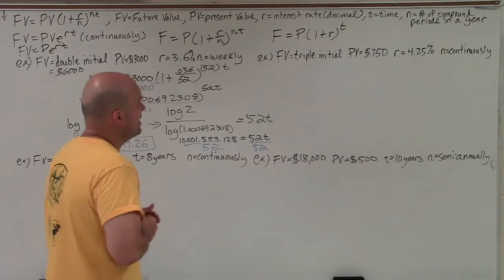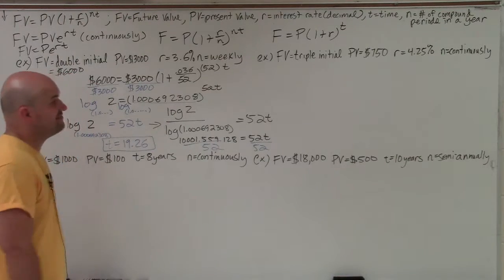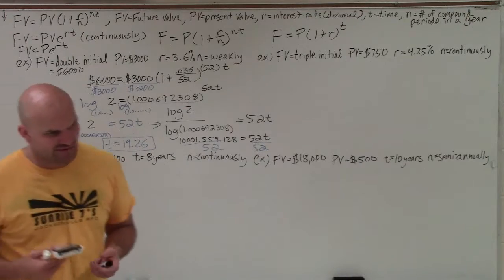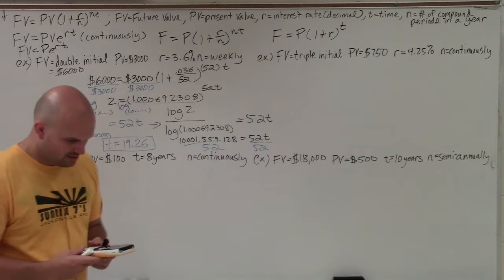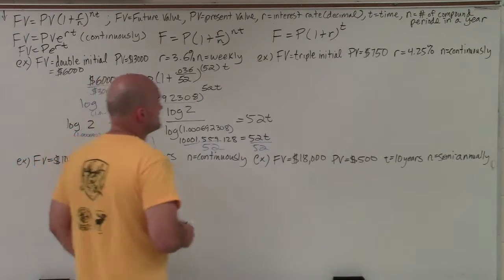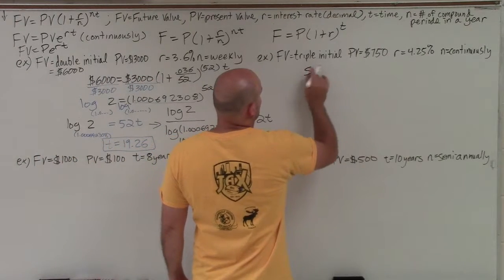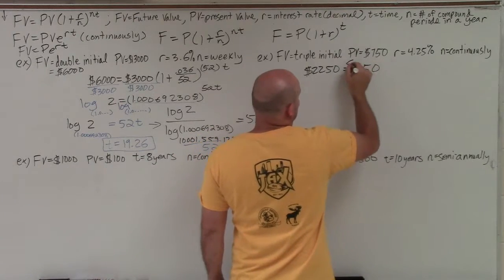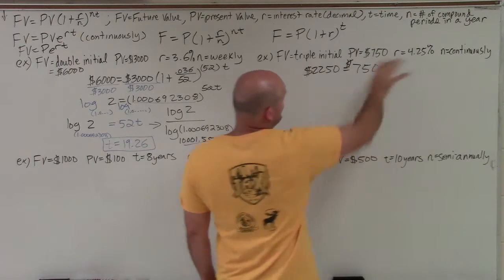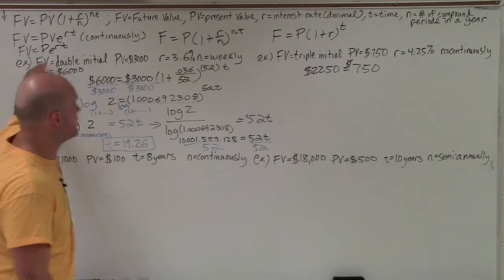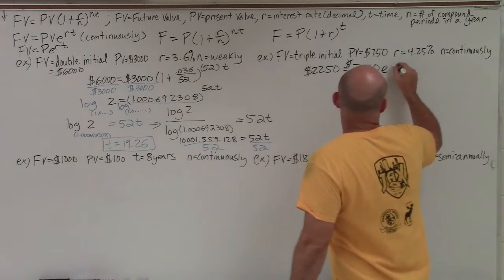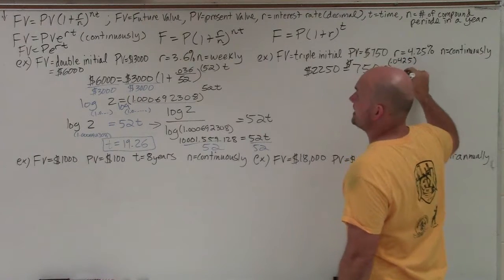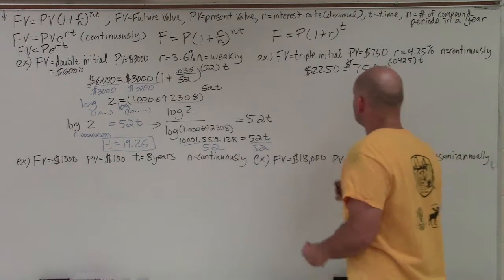OK. So let's try to get to the next one. So now I want to triple my value. So that's going to be 750 plus 750 plus 750, which would be 2250. Right. 2250. Perfect. So my final value is 2250. Present value is 750. Now this is compounded continuously. So therefore I'm going to be using this formula. So it's going to be e raised to the r, which is 0.0425 times t, which we do not know.